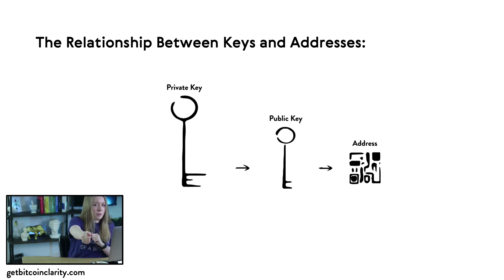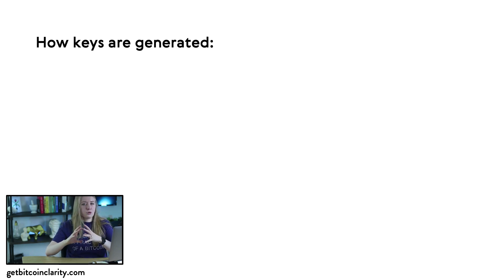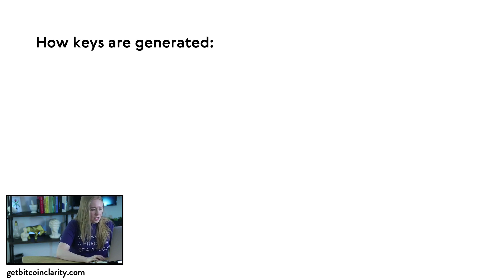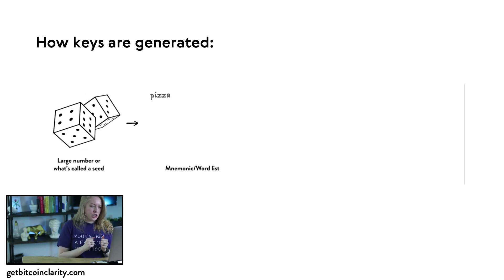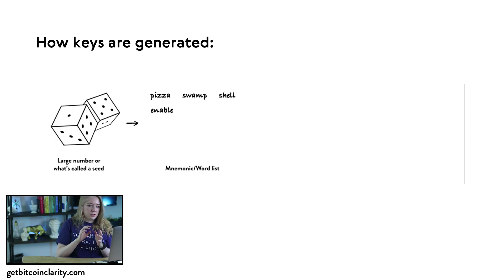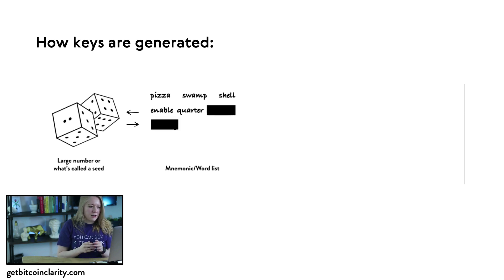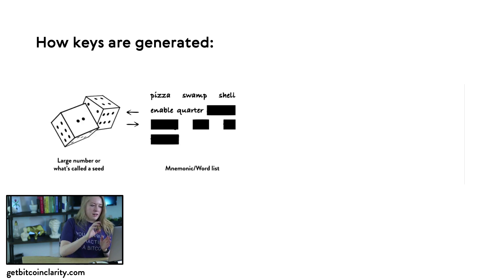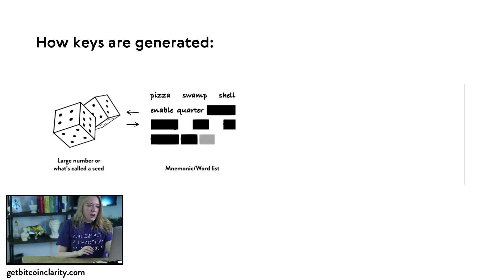If I send you the public key, you wouldn't be able to discover what my private key is. Private keys are generated using a really large random number — the computer or software generates that random number — and then it maps that to a word list, so your random number can be recoverable with human-readable words. We can visualize that: on the left we have dice that generate your mnemonic, or word list. I have some words blanked out because you never want to share that — your private key should stay private, and your mnemonic is a way to regenerate that private key.